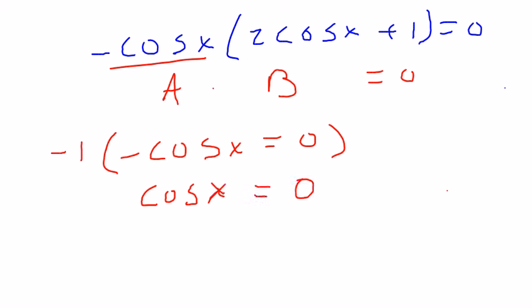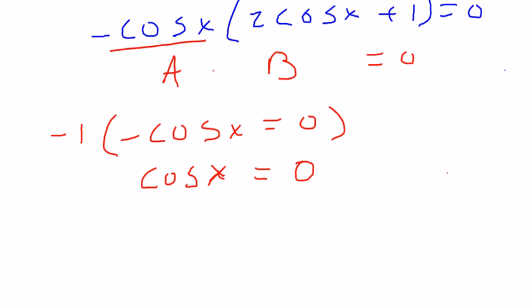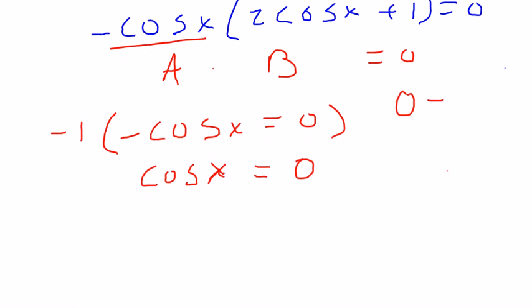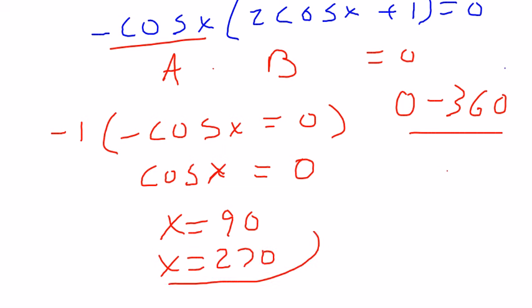And this turns to still 0, right? Negative 1 times 0. So if negative cosine of x equals 0, then positive cosine of x also equals 0. So we look between 0 and 360 for our answers for cosine. And that happens at 90 degrees, and it happens again at 270. So these are two of our answers so far for this problem. This is if a is true. The second one would be if b is true.